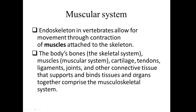What is the Musculoskeletal System? The Musculoskeletal System comprises the Skeletal System, Muscular System, Cartilage, Tendons, Ligaments, Joints, and other Connective Tissues that support and bind tissues and organs together.